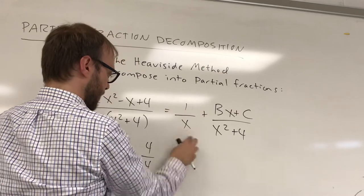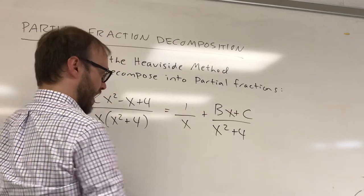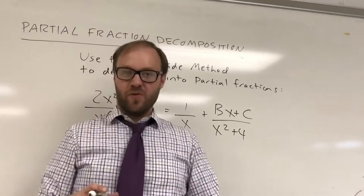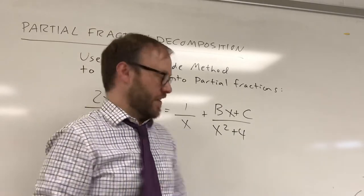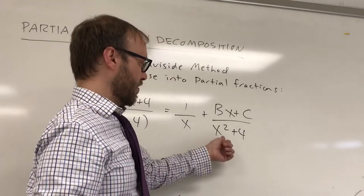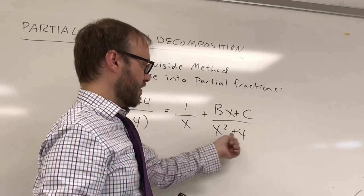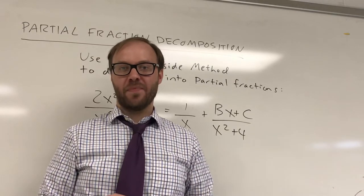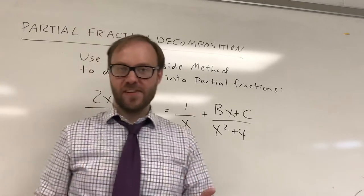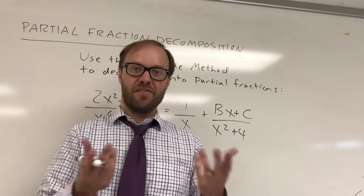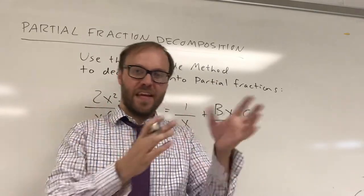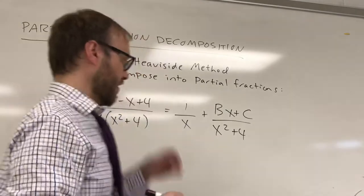Now your problem here at this point is unless you're going to use imaginary numbers, which I suppose you could toy around with but isn't really the standard method, you don't have a real number value that's going to make that denominator zero. And this is where things can get a little bit more complicated. You can use the Heaviside method to find the values that you can find and then you can do something similar to the process that led into the Heaviside method to find some of your other values.